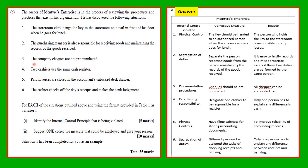Situation three: the company checks are not pre-numbered. The internal control violated is documentation procedures. The corrective measure is to have your checks pre-numbered, so that you can account for all your checks. If checks are numbered in sequential order, you will know when one is missing. Without numbers on the checks, you cannot tell whether a check is missing.